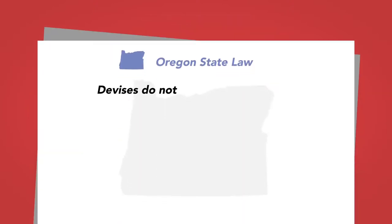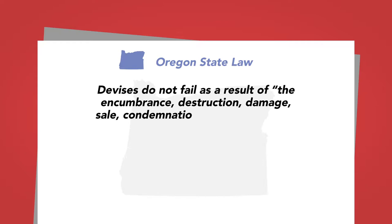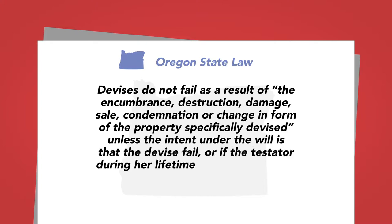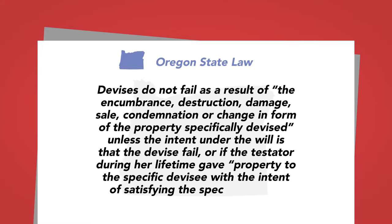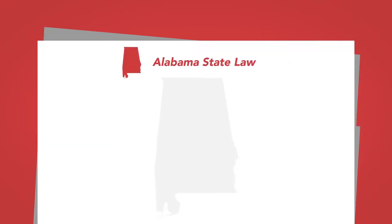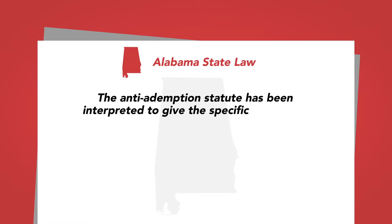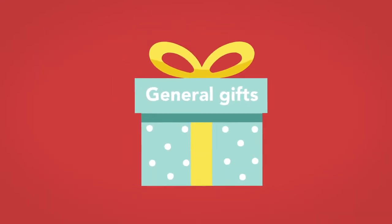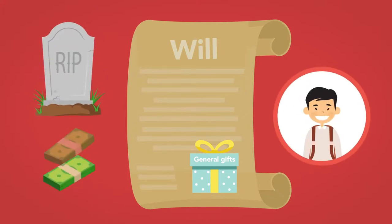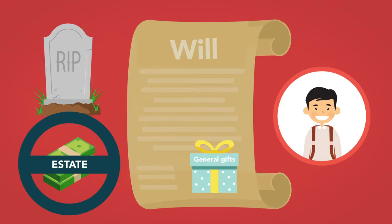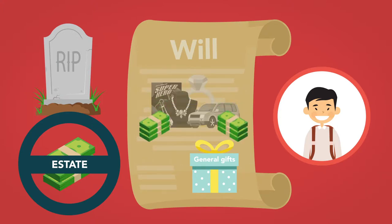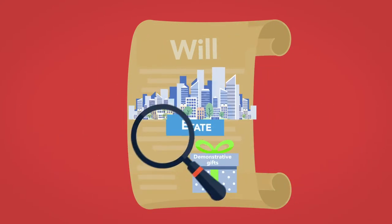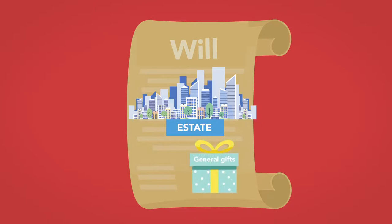In Oregon, for example, devises do not fail as a result of the encumbrance, destruction, damage, sale, condemnation, or change in form of the property specifically devised, unless the intent under the will is that the devise fail, or if the testator during her lifetime gave property to the specific devisee with the intent of satisfying the specific devisee. In Alabama, the anti-ademption statute has been interpreted to give the specific devisee of real property the outstanding balance on the mortgage after sale. It should be noted that general gifts do not adeem. If a testator makes a will giving a general gift of $10,000 to a nephew upon death and the estate cannot cover it with cash, the gift will not necessarily fail. Instead, other assets from the estate may be sold so that the gift of $10,000 can still be made to the nephew. Demonstrative gifts likewise do not adeem. If the purported source of the demonstrative gift is not in the estate, the demonstrative gift is still filed as a general gift from the rest of the estate. So if a will provides a gift of $10,000 to Joe from my bank account at First Bank, and at the time of death the account at First Bank had been closed, Joe is still entitled to $10,000 from the estate as though it were a general gift.